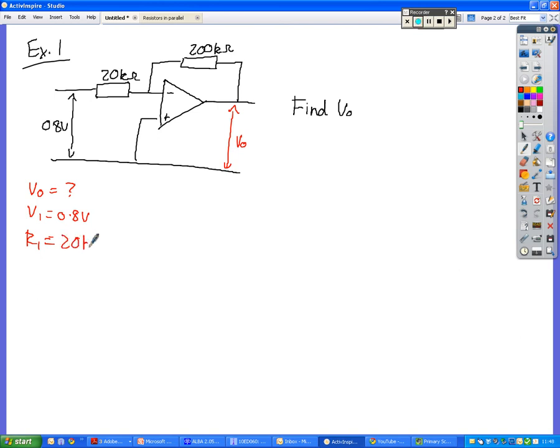20k ohms. Yep, 20k ohms. Because R1 is our input resistor. The one that's in inverting mode, the one that's connected to the inverting terminal. And RF is our feedback resistor. The resistor that feeds back the signal from the output through to the input. So RF is 200k.